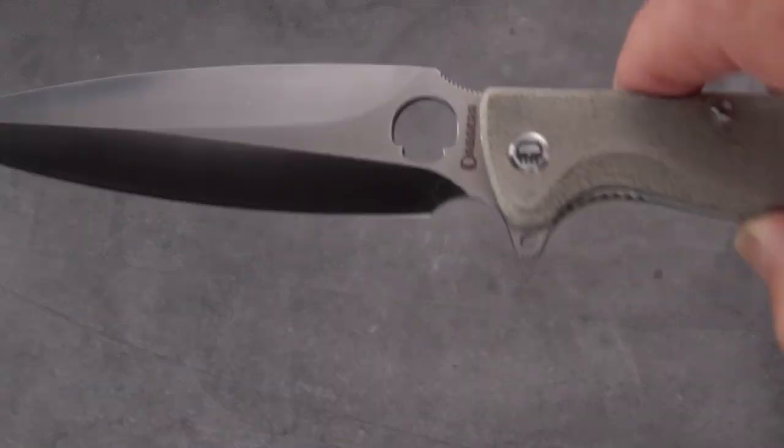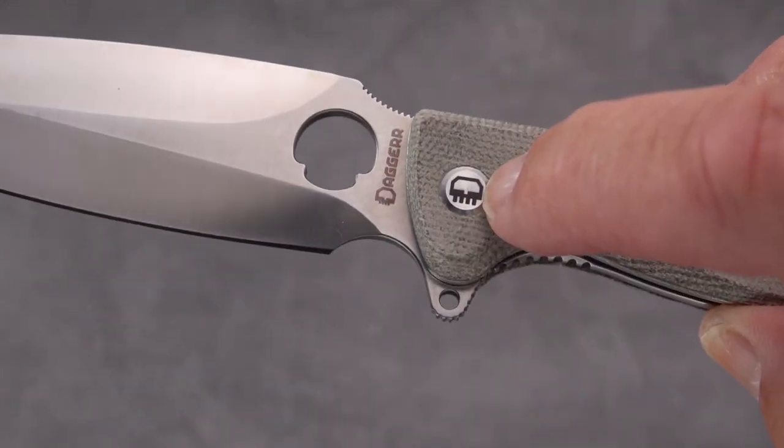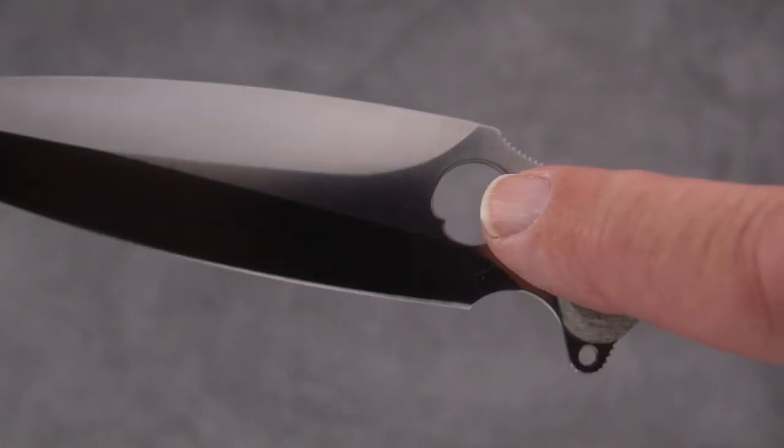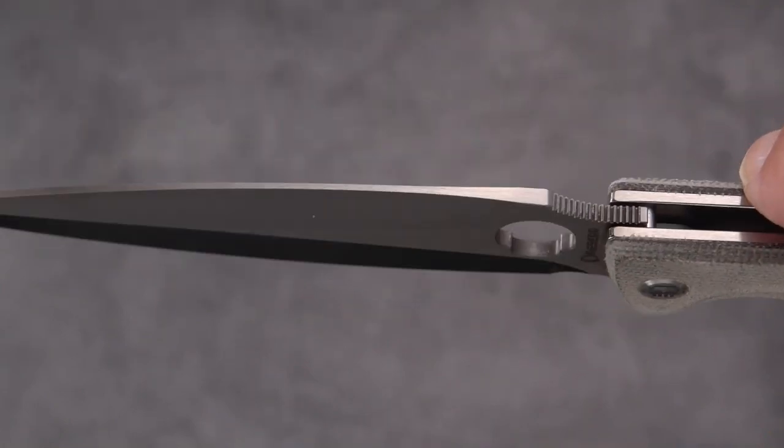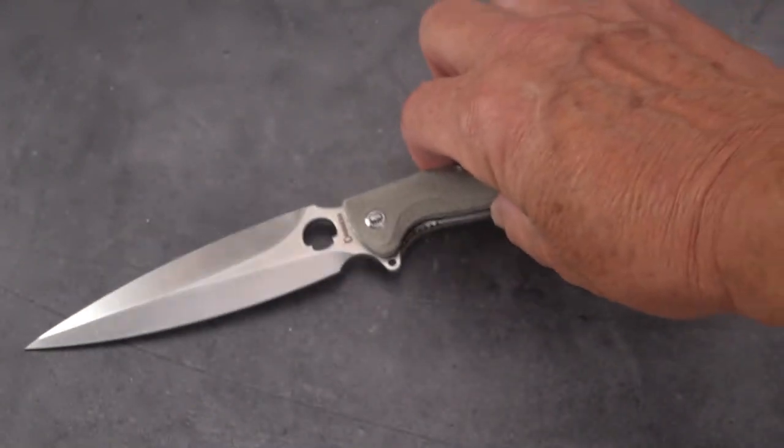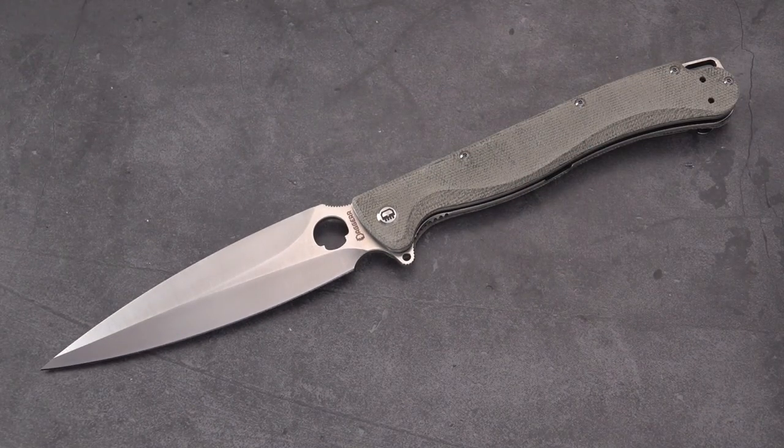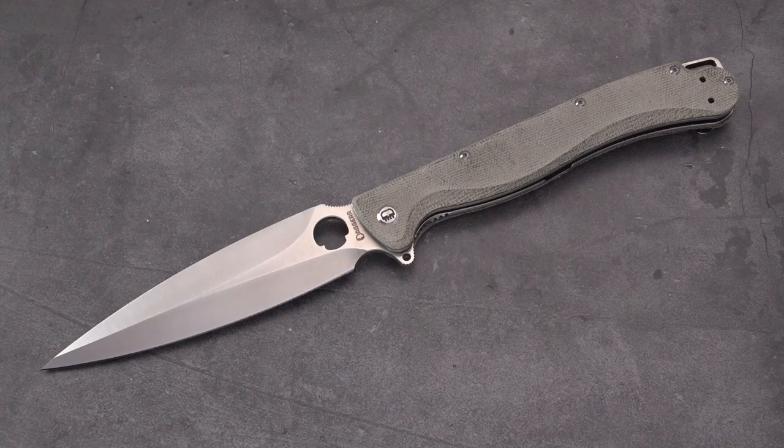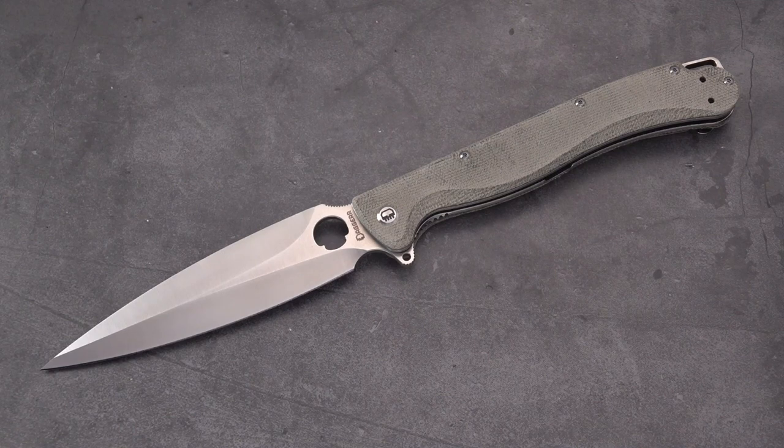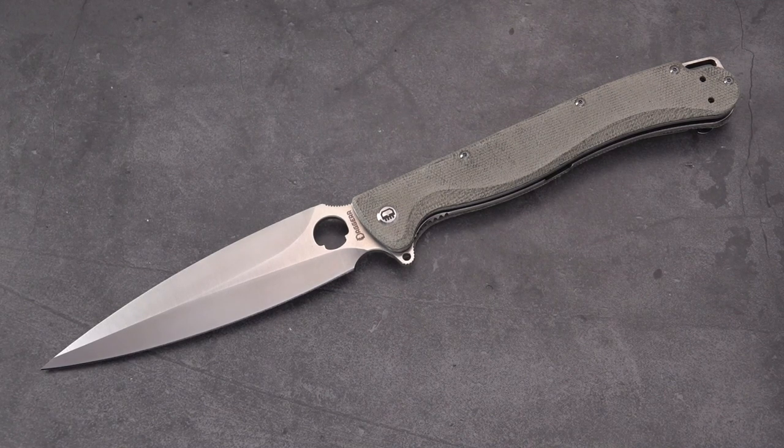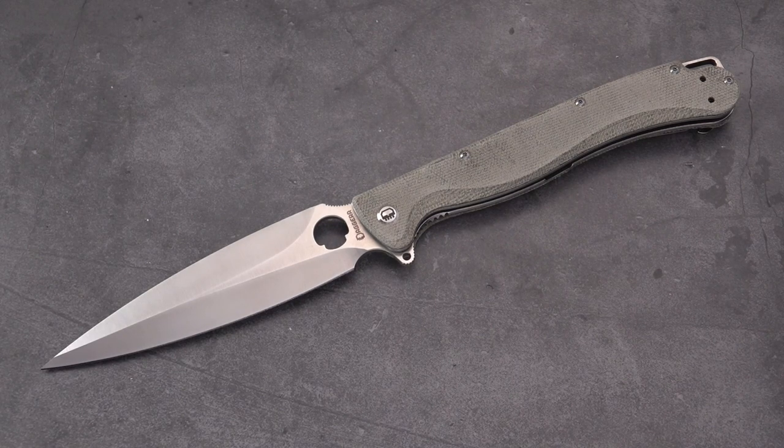That is the Dagger Knives Vendetta in green micarta. Here's one other little feature - there's the screaming skull pivot, kind of cool, and the screaming skull hole opener. That's what I got for you today. We'll be back soon with another knife review. Be well, take care, don't forget to like the video and subscribe.